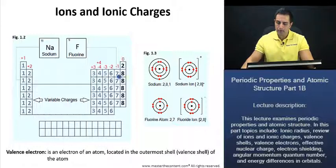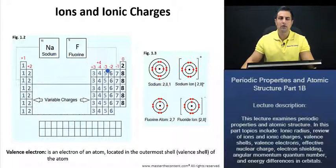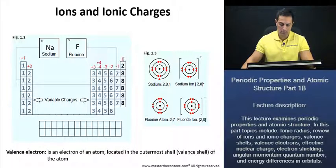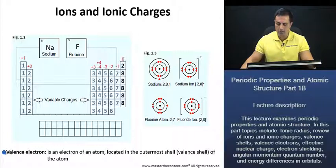The elements on the periodic table all have partially filled outermost shells, except for our noble gases. If we take a look at group 1, group 1 is going to have one valence electron in its outermost shell. A valence electron is an electron of an atom located in the outermost shell — the valence shell of the atom. Group 1 elements have one valence electron.